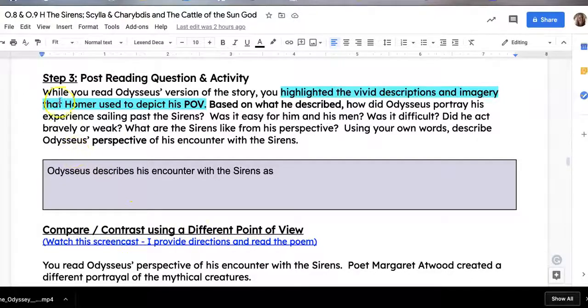So the question you're supposed to answer after reading is: while you read Odysseus' version of the story, you highlighted the vivid descriptions and imagery that Homer used to depict his point of view. Based on what he described, how did Odysseus portray his experience sailing past the Sirens? Was it easy for him and his men? Was it difficult? Did he act bravely or did he act weak? What were the Sirens like from his perspective? So using your own words, describe Odysseus' perspective of his encounter with the Sirens.